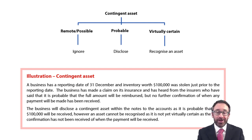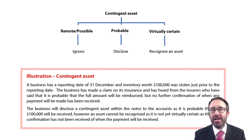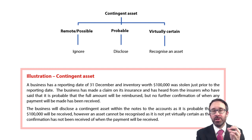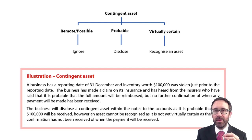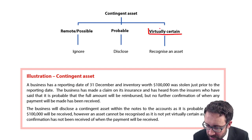So what is a contingent asset? It's whereby there is uncertainty about the receipt of an asset at some point in the future. The key thing is it comes down to prudence, because it is not prudent to recognize an asset within the accounts unless it is virtually certain.